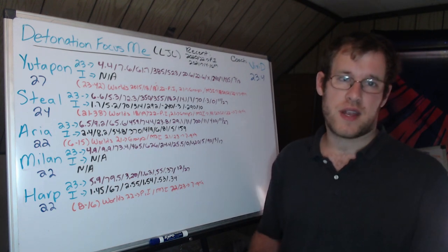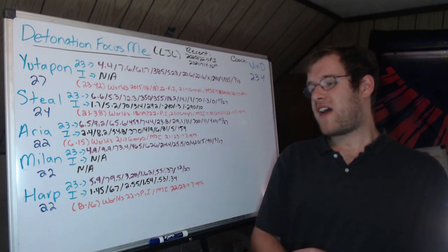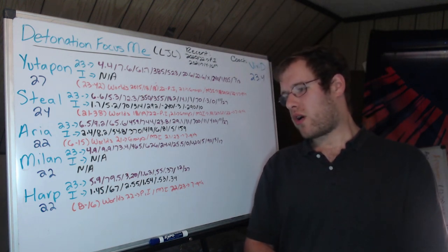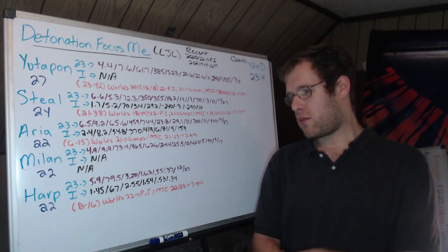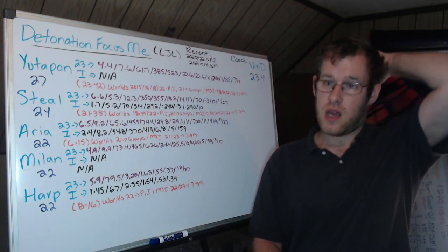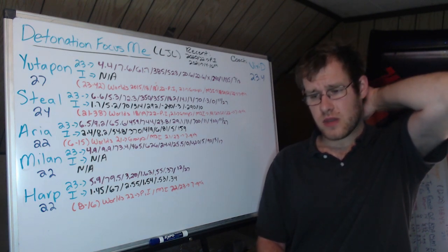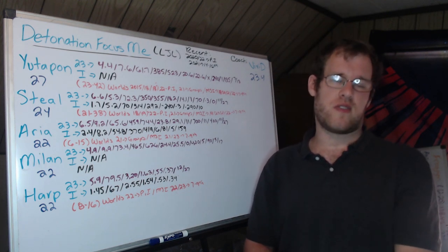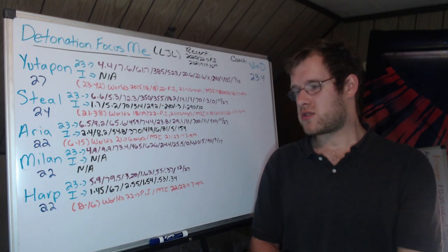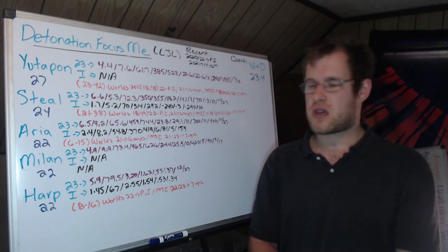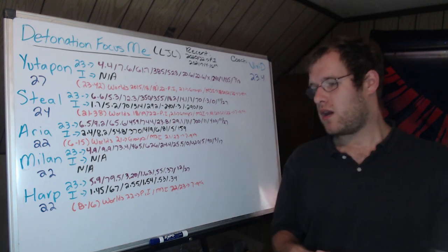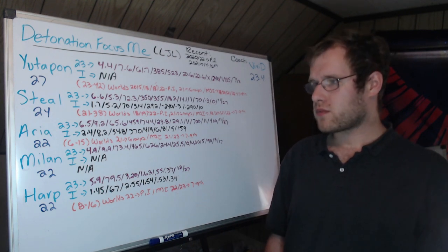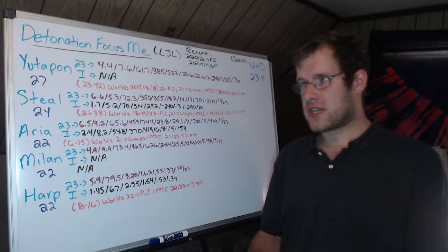Internationally, he dies quite a bit more than he does domestically. 1.45 KDA, 67% KP. 2.55 vision score per minute. On average, places seven to eight wards every five minutes, a control ward every other minute, and clears one ward every three minutes. The vision score drop off makes a lot of sense given that now, when he goes to an international event, he's against much better bot laners than he faces in the LJL. And the vision score suffers despite putting down pretty much the same amount of wards. Internationally, 8 and 16. Played with them last year at Worlds, dropped out in play-ins, and then MSI last year and this year, out in play-ins. So you know, outside of Milan, everybody has international experience.